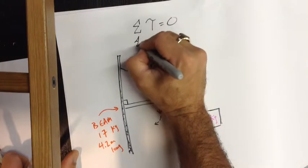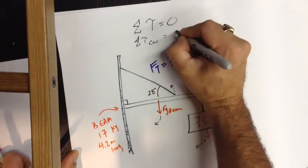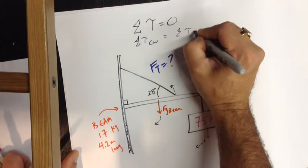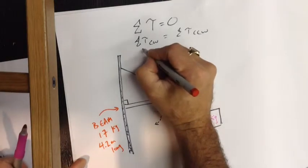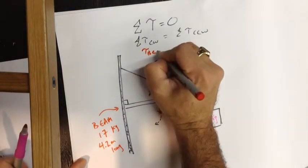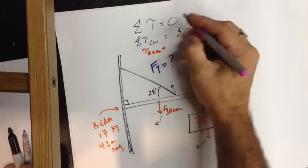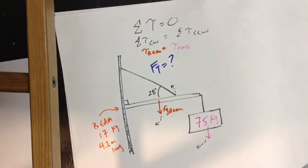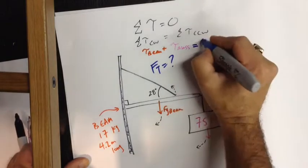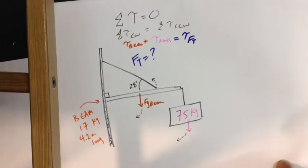So we can say the sum of our torques clockwise will equal the sum of our torques counterclockwise. So for this system that's drawn here, it's going to be the torque of the beam plus the torque of the mass will equal the torque of Ft. So that's our starting point for this system.